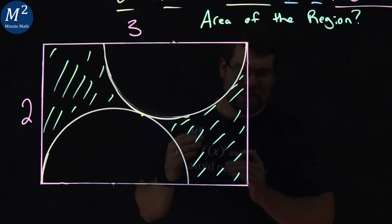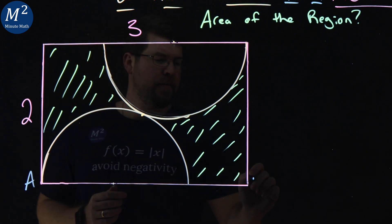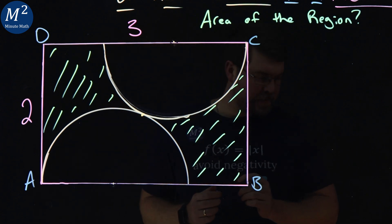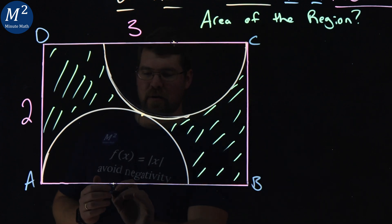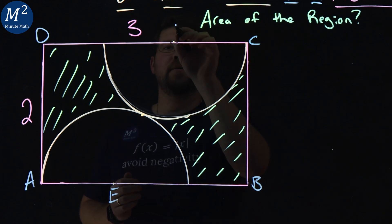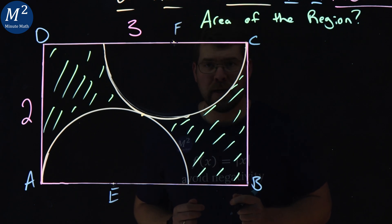One of the first things I like to do is label some points here. So let's go here A, B, C, and D. So we're all on the same page here. And let's go E and then F right here. So we have E, F, and then ABCD as the rectangle.